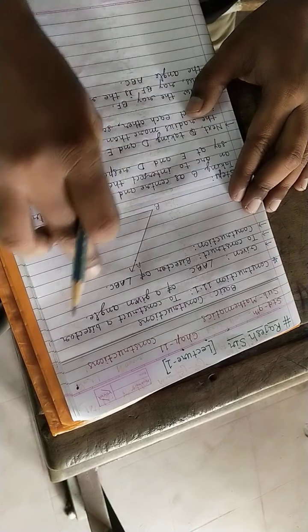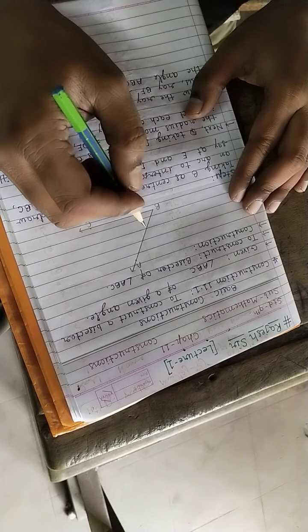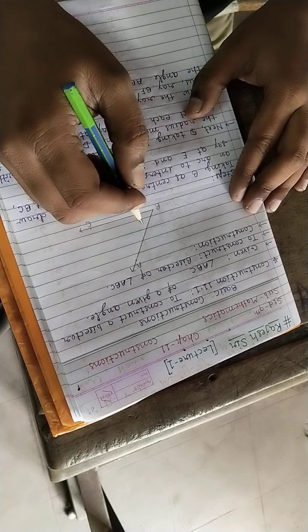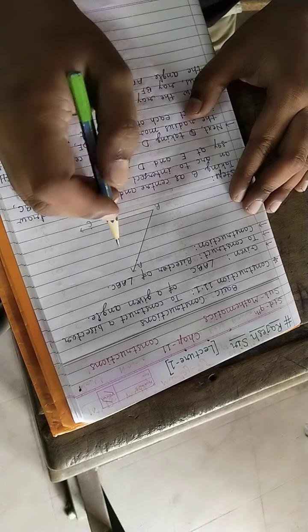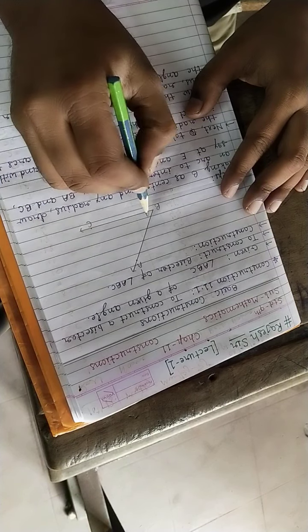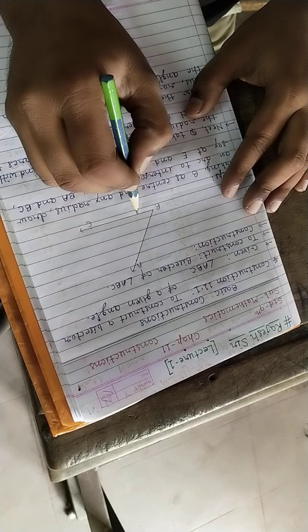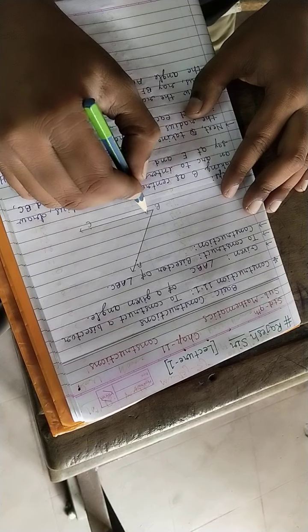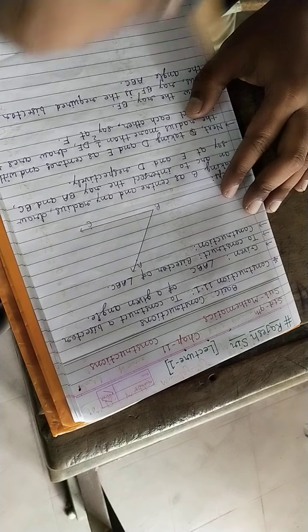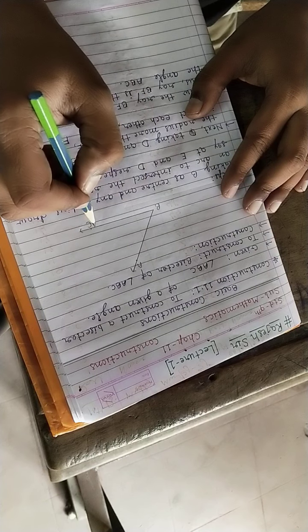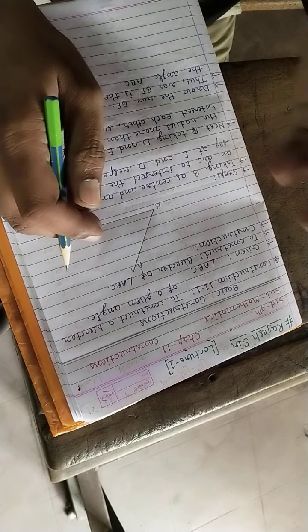We have to draw the bisector. Bisector means something which is dividing anything in two equal parts. So this angle ABC is of some degree. We have to draw a ray in such a way that it should bisect the given angle ABC, dividing it into two equal parts.